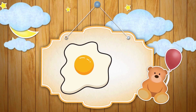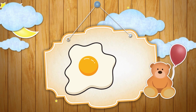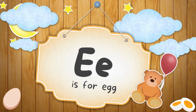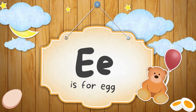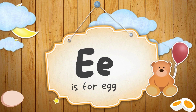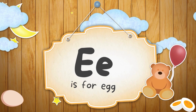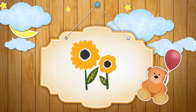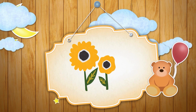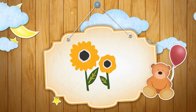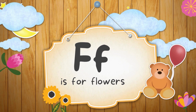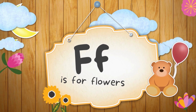See the image and guess the alphabet. E is for Egg. See the image and guess the alphabet. F is for Flowers.